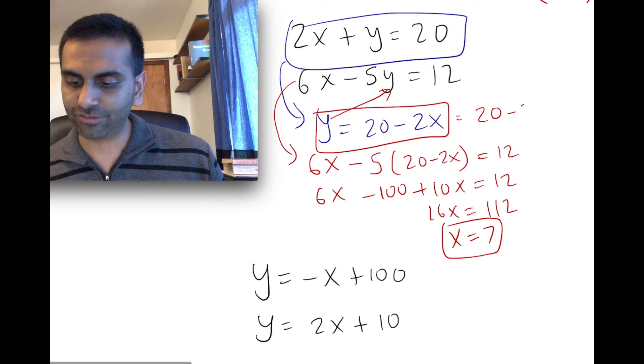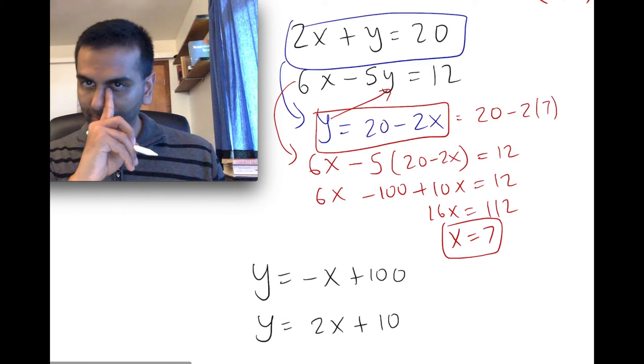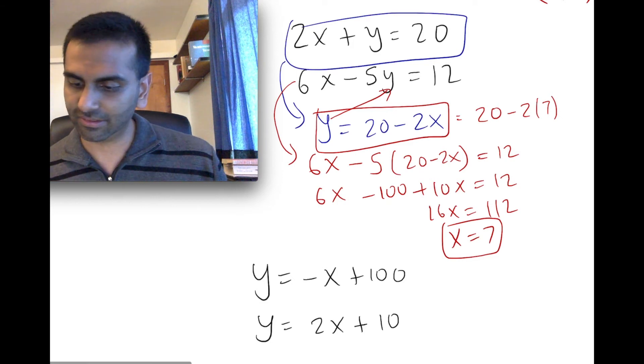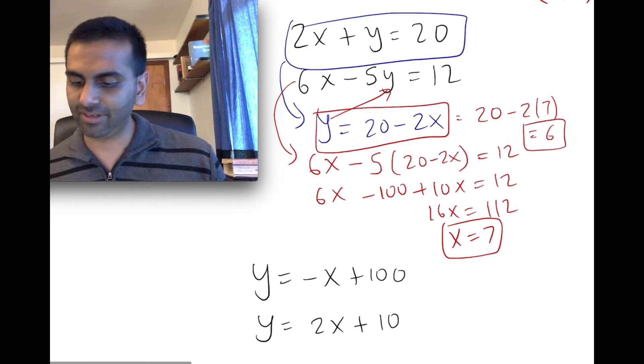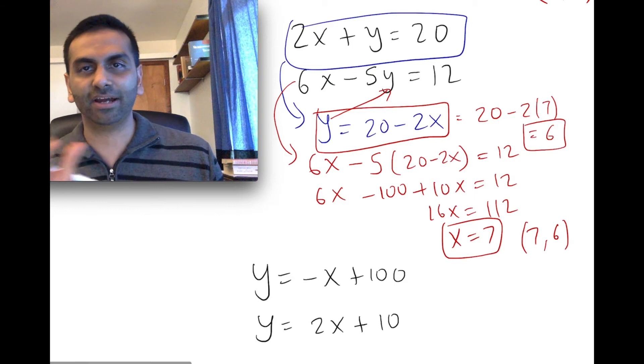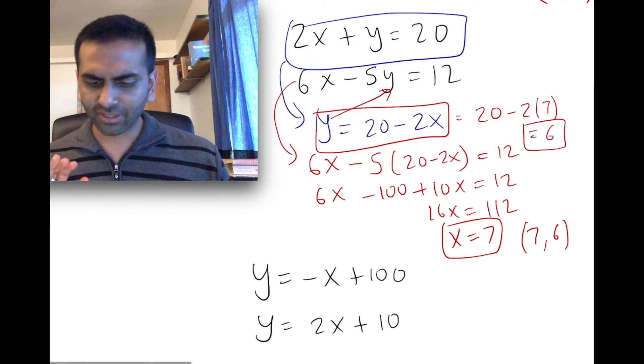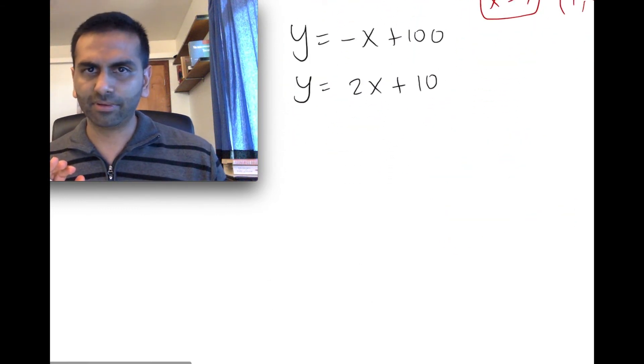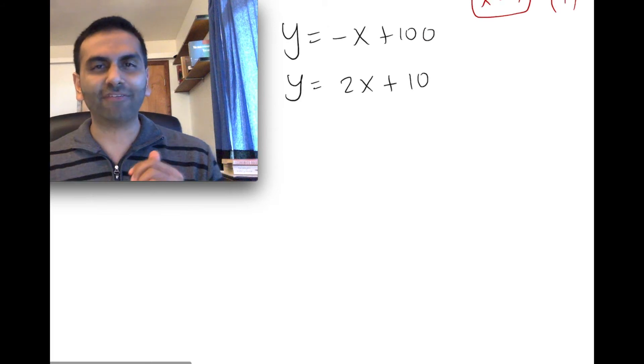So that's going to be 20 - 2x, but x is really 7. So 20 - 14, which is 6. So y is 6, x is 7. So I can even say 7, 6 is my final coordinate point of my answer, x comma y.